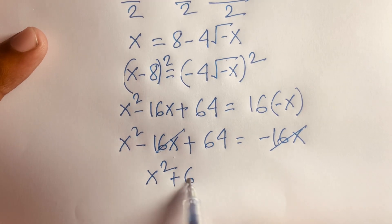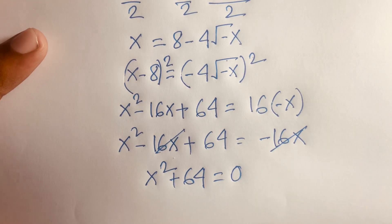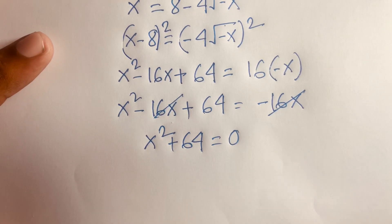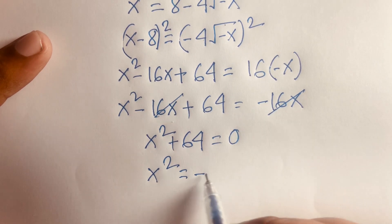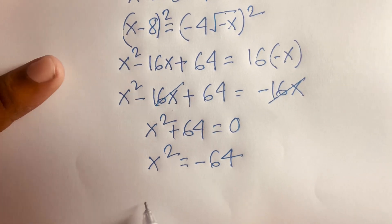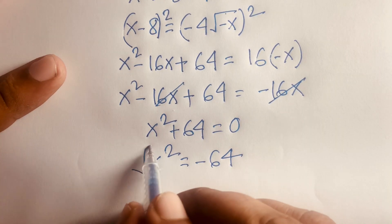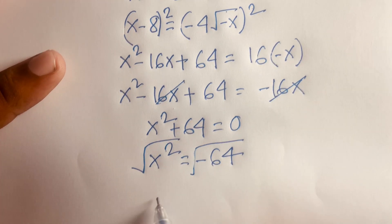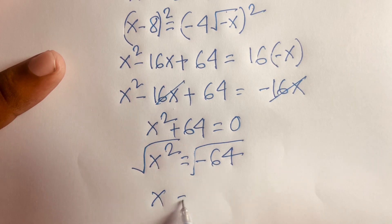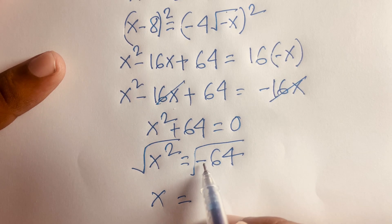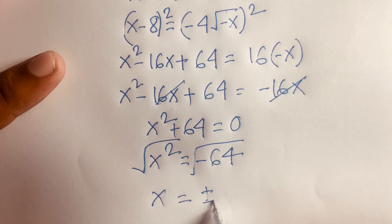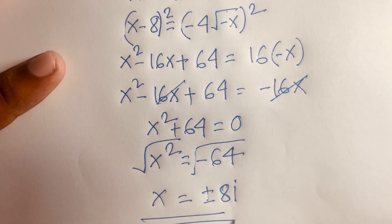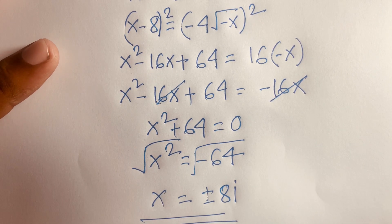From x² + 64 = 0, we get x² = −64. Taking the square root of both sides gives x = ±√(−64) = ±8i. This is our final answer.